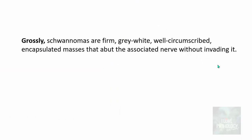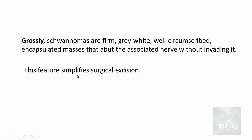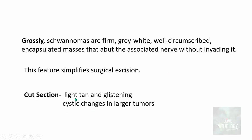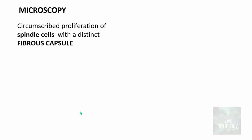Grossly, schwannomas are firm gray-white, well-circumscribed encapsulated masses. Unlike neurofibroma, these encapsulated masses abut the associated nerve without invading it, which simplifies surgical excision. On cut section they are usually light tan and glistening, and larger tumors can show cystic changes. Microscopically they are comprised of circumscribed proliferation of spindle cells with a distinct fibrous capsule — they are truly encapsulated tumors.